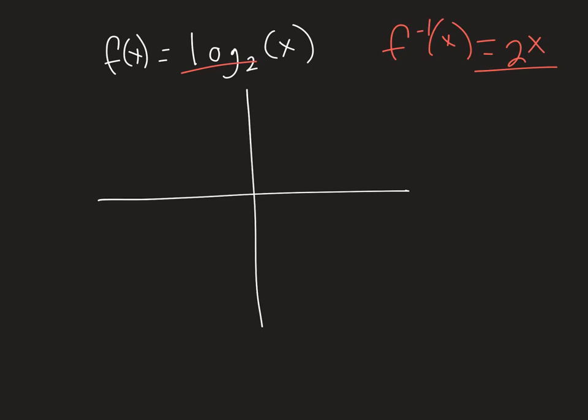If we look at 2 to the x, we know that looks something like this. It's very close to the x-axis and then it takes off as x increases.